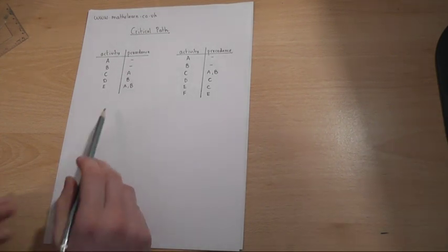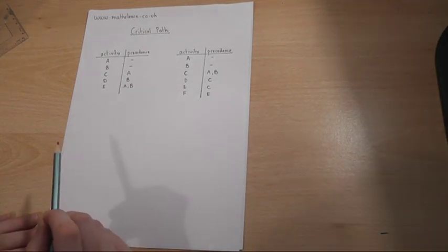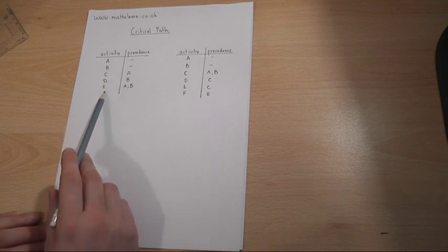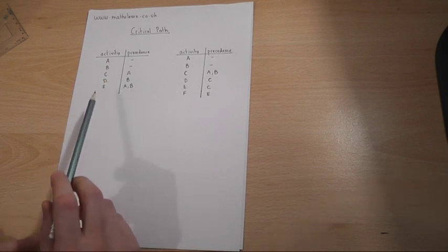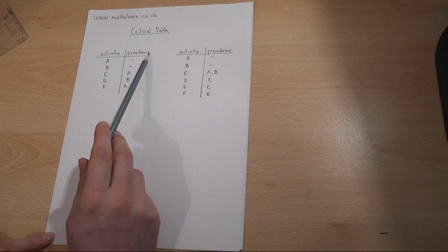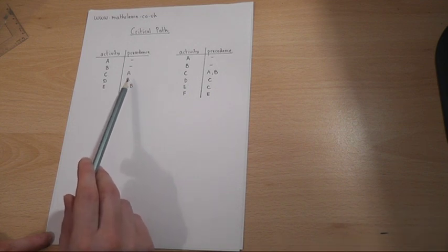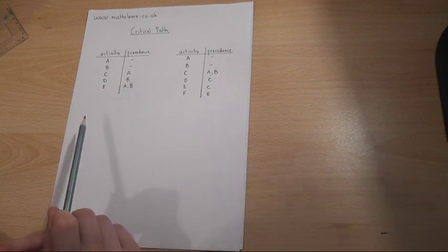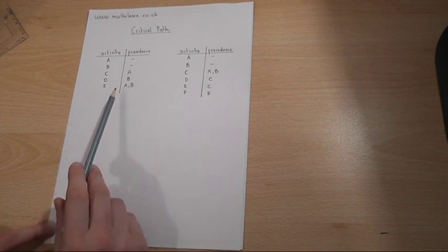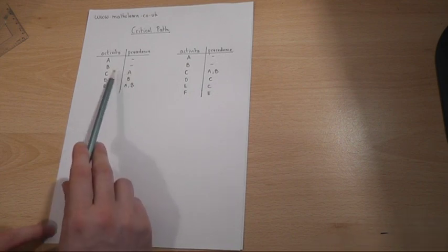Now if we look at the first one, we can see a series of activities, and a reminder that these precedences tell you what must come before. So for example, activity A must come before C.